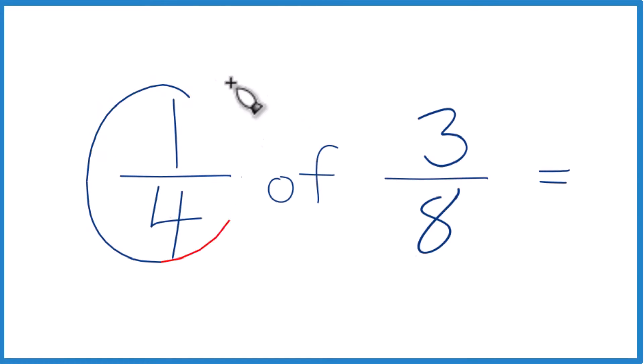So here's how you find one-fourth of three-eighths. It's helpful when we have one-fourth of three-eighths, a fraction of something. Instead of 'of' here, let's think of this as multiplication.